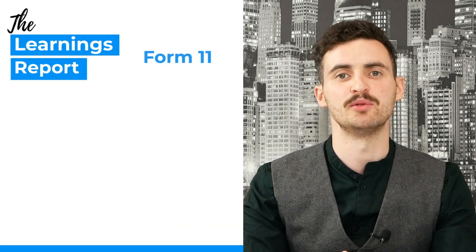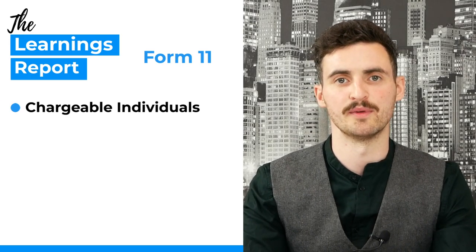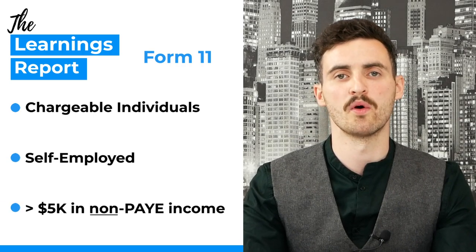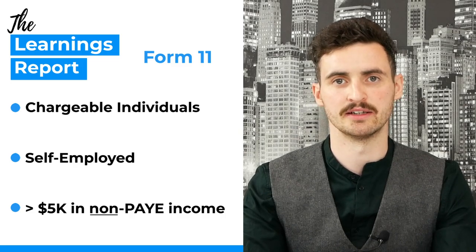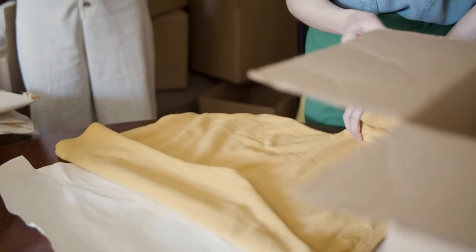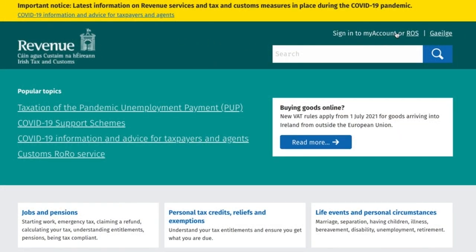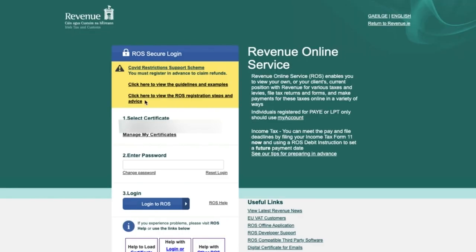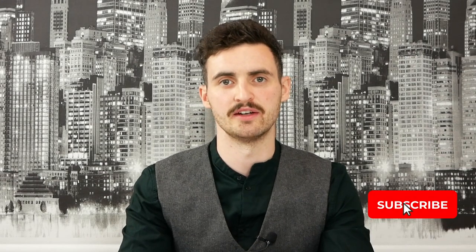Lastly, we have Form 11, which is for people whom Revenue refer to as chargeable individuals. You'll need to file a Form 11 if you are self-employed or a PAYE earner with more than €5,000 annually in non-PAYE income. For example, if you have a full-time PAYE job but also sell t-shirts on Amazon generating an extra €10,000 annually, you'd file a Form 11. It's quite extensive and includes income and capital gains declarations, so you only need one form. You'll need to register as a chargeable individual through ROS on revenue.ie.